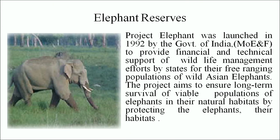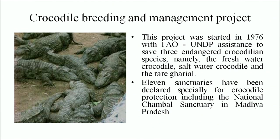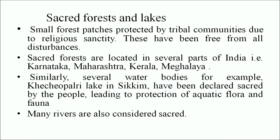Elephant reserves: Project Elephant was launched in 1992 by the Government of India to provide financial and technical support for wildlife management efforts by states for their free-ranging populations of wild Asian elephants. The project aims to ensure long-term survival of viable populations of elephants in their natural habitat. Crocodile Breeding and Management Project: established in 1976 with FAO/UNDP assistance to save three endangered crocodilian species — the freshwater crocodile, the saltwater crocodile and the rare gharial. 11 sanctuaries have been declared specifically for crocodile protection.